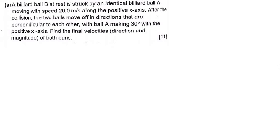In this tutorial we are going to talk about glancing collision. The question, which came from an exam, is: a billiard ball B at rest is struck by an identical billiard ball A moving with a speed of 20 meters per second along the positive x-axis. After the collision, the two balls move off in directions perpendicular to each other, with A making 30 degrees with the positive x-axis. Find the final velocities of both balls — direction and magnitude.